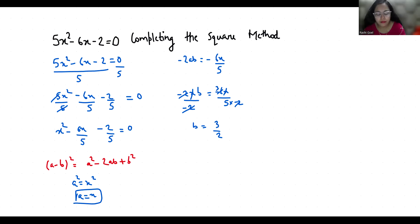So I am writing -2 times x times B equals -6x/5. Cancel out x with x, and minus sign with minus sign, B = 6/5 divided by 2. B = 6/10. Then we cancel out the 2s. So it is 3/5.